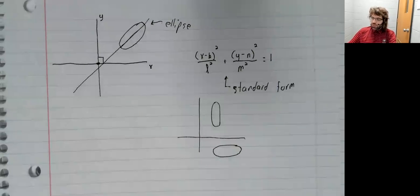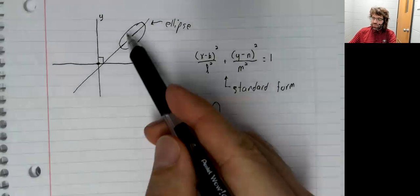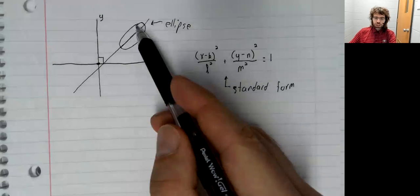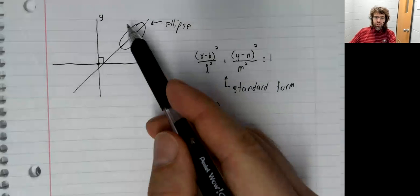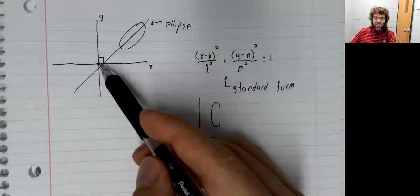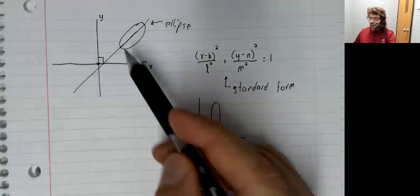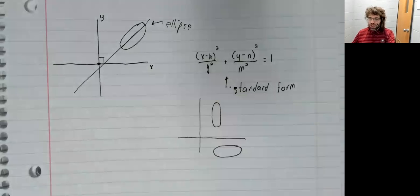We could imagine this ellipse as existing in relationship to this point, in relationship to the origin, and not worry about the x and the y-axis.